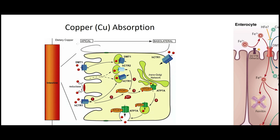In this video I'm going to talk about copper absorption, and we'll see that there is a bit of crossover with iron absorption. In this first figure we can see that DMT-1, this divalent metal transporter that we saw in iron absorption, is also able to import copper — specifically copper 2+.